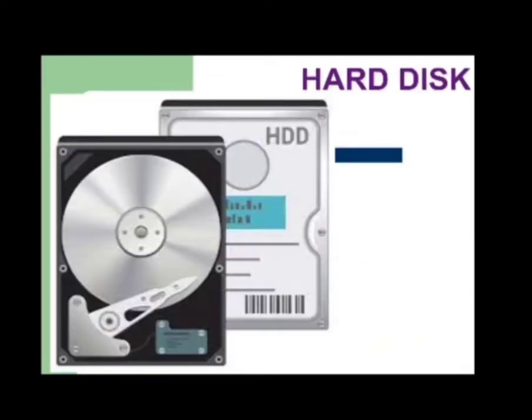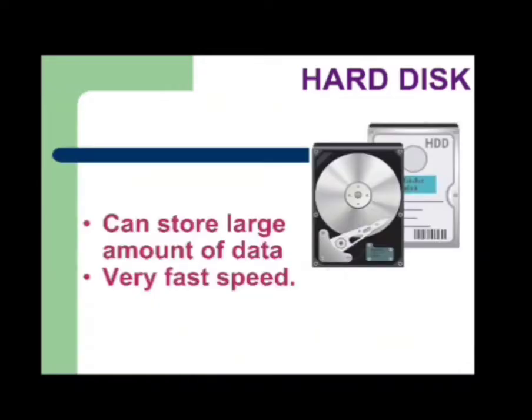Hard disk is the main storage device that is fixed inside your CPU. Hard disk is used to store a large amount of data and information, and it is also known as hard drive. You can store a very huge amount of data and it is also very fast in speed.